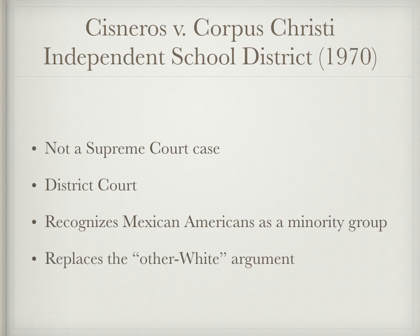In 1968, Jose Cisneros and 25 other Mexican American parents filed suit against the Corpus Christi Independent School District. They claimed the school district was operating a dual school system at all levels on a de facto basis — meaning based on the facts it was clear there was a school for whites and a school for African Americans and Mexican Americans.